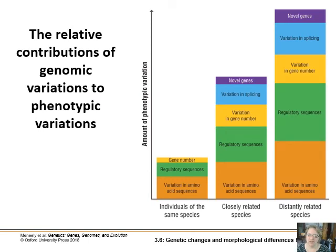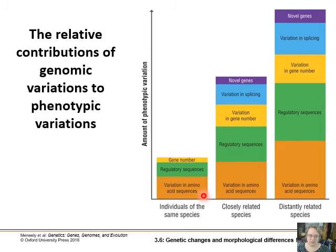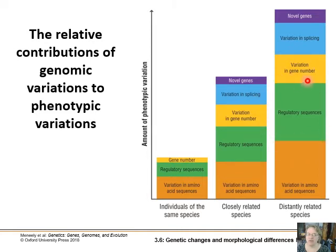Depending on whether you're looking at individuals of the same species, closely related species, or very different species, there are different amounts of genomic variation contributing to phenotypic differences. Within the same species, you're looking at specific amino acid changes and small mutations. In closely related species, novel genes and splicing variations become more important. In really distant species, regulatory sequences become a more prominent consideration.